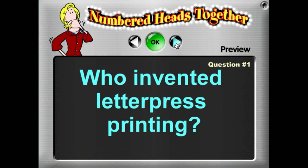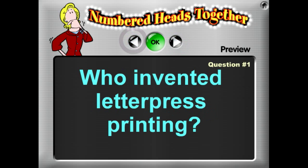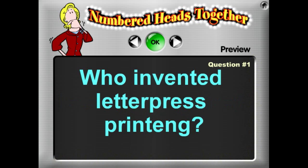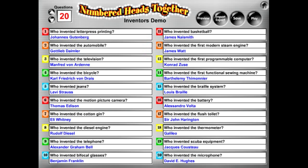You can click the Next button and it shows you the answer. If you notice a typo — for example, 'Who invented letterpress printing' has a typo — right here in preview you can go ahead and make your changes, hit OK, and it will accept the changes.